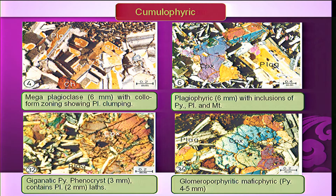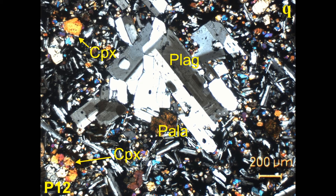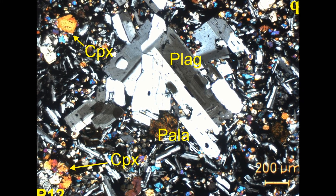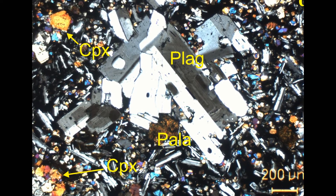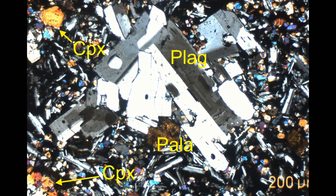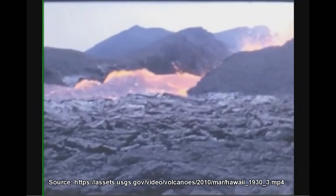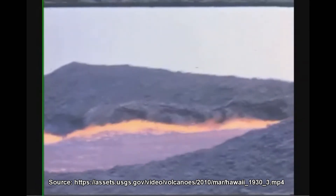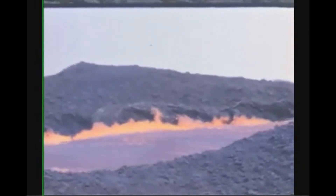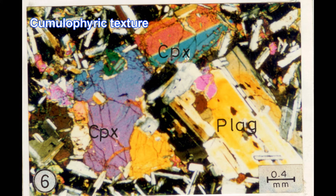Another variety of texture is cumulophyric texture. Each lava flow shows a variety of textures, each with its characteristic textural features — they can be identified and distinguished by these features. Cumulophyric means that many phenocrysts are clumped or clustered together at one place, just like things floating in water during the rainy season that clump together. Similarly, during crystallization in magma, certain crystals club together and form cumulophyric textures.